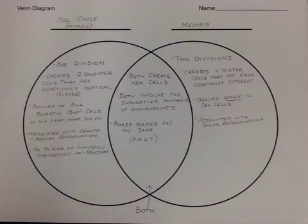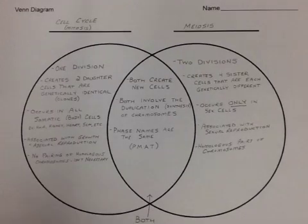With mitosis, there is no pairing of homologous chromosomes — it simply isn't necessary. We just need to take the genetic information, double it, and then split it. In meiosis, though, we need to make sure we end up with haploid cells at the very end, so having homologous pairs of chromosomes that line up and divide from one another is an important piece.